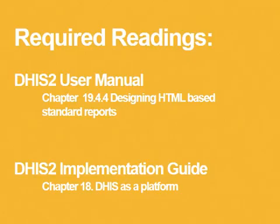As we're getting into more specific and detailed things, there are fewer specific chapters to read through. The DHIS2 implementation guide, chapter 18, 'DHIS2 as a Platform,' has some good content about web portals and API, as well as chapter 19.4.4 in the user manual, 'Designing HTML-Based Standard Reports.' The best approach is to open both the implementation guide and the user manual as a single HTML page and search for 'API' or 'web API,' as each chapter has relevant pieces depending on how deep you want to go into coding.